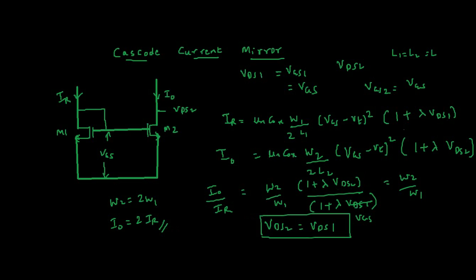Because of this dissimilarity — VDS2 not equal to VDS1 — we get an output current that is not exactly the desired multiple of IR. The ratio W2/W1 alone does not determine the exact output current; it is also governed by the factor (1 + λ·VDS2)/(1 + λ·VDS1). To ensure proper working of the current mirror, VDS2 must equal VDS1.